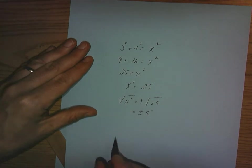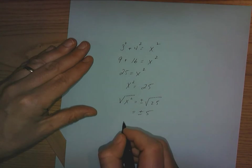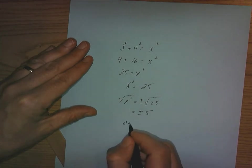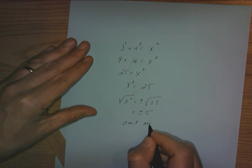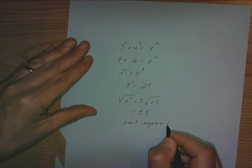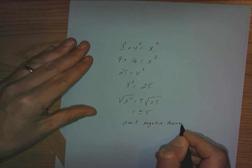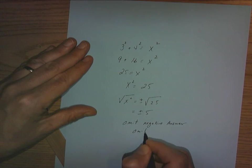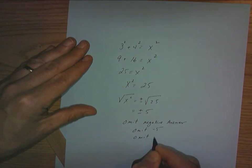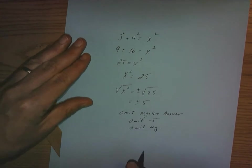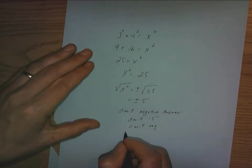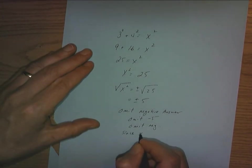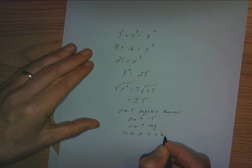Since we're using length, mathematically what we say is we want to disregard the negative answer. So we say omit negative 5 or negative answer. You can say omit negative 5. You can say omit negative. Any one of those is fine since x is a length.